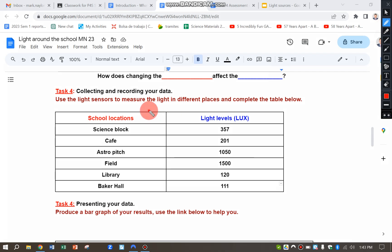You can see here the independent variable in this experiment are the different locations around the school. If you did more, you could always add in more rows below. If you did more locations, that's fine.